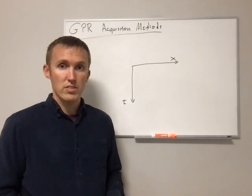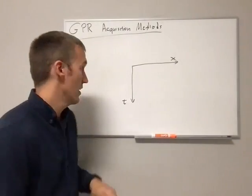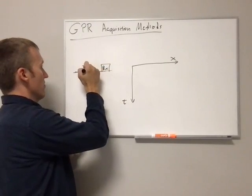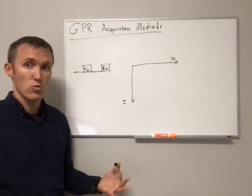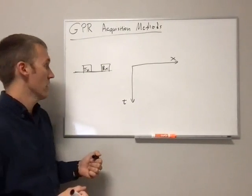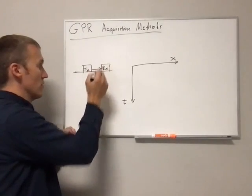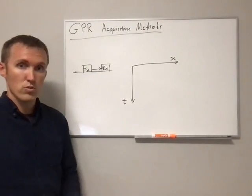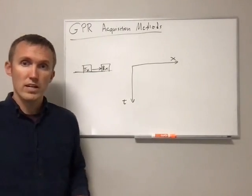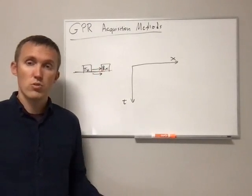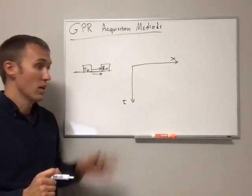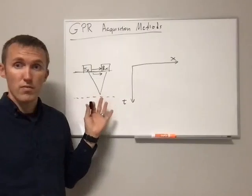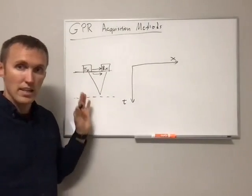There are actually a couple of different waves that occur with ground penetrating radar in a bi-static system with two separate receiving and transmitting antennas. We have an air wave which travels through the air from the transmitter to the receiver, similar to a seismic source generating an air wave. We also have a direct wave traveling through the medium, and then we have our reflected wave. The point at which we observe the reflected wave compared to the direct wave depends on the velocities and the layer depth.